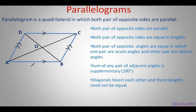In a parallelogram, diagonals bisect each other but their lengths need not be equal. AC bisects BD, so DO and BO are equal. Also, BD bisects AC, so AO and OC are also equal.